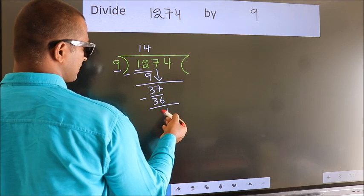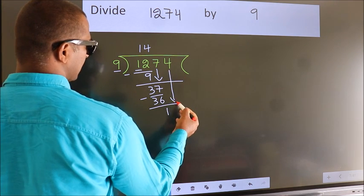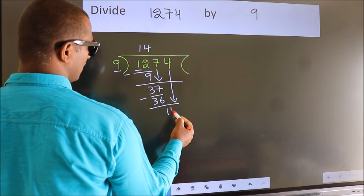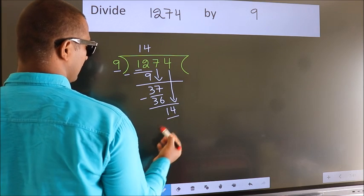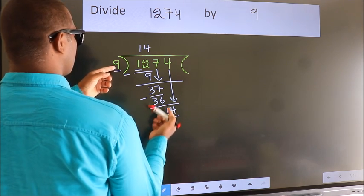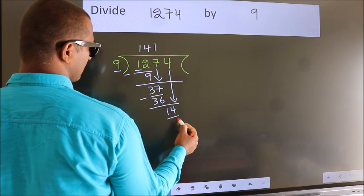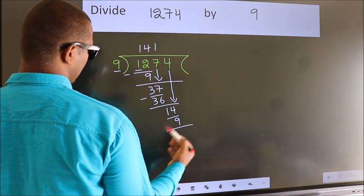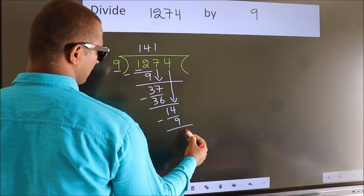After this, bring down the next number. So 4 down. So 14. A number close to 14 in the 9 times table is 9 once 9. Now we subtract. We get 5.